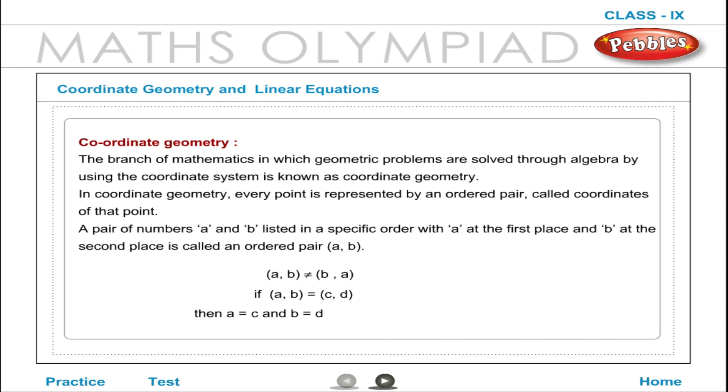If (a, b) is equal to (c, d), then a is equal to c and b is equal to d.